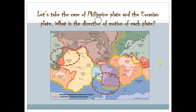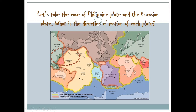Now let's take a look at the Philippine plate and the Eurasian plate. What is the direction of the motion of each plate? We have the Philippine plate and the Eurasian plate — if you could notice, instead of the arrows moving away from each other, these two arrows are actually pointing towards each other. So the red lines are forming convergent plate boundaries, as you can see in the label of the map. Another example would be the South American plate and the Antarctic plate — these arrows are also moving toward each other, thus we have this red line creating the convergent boundaries.